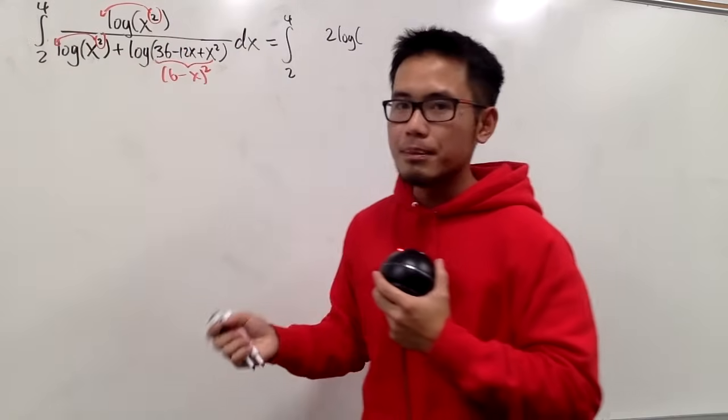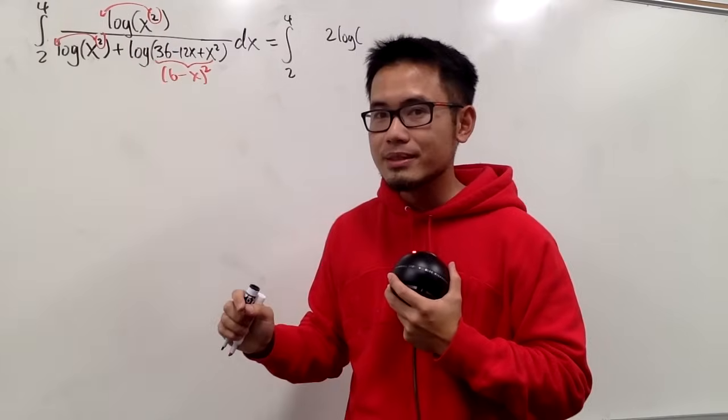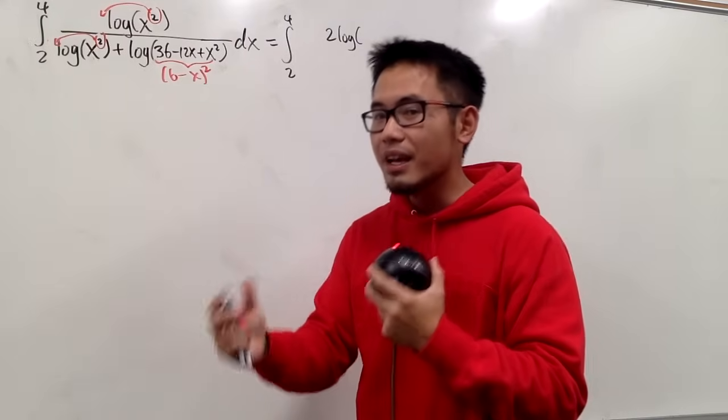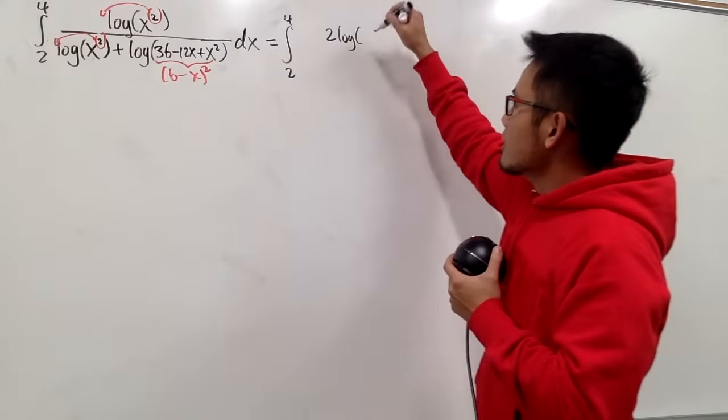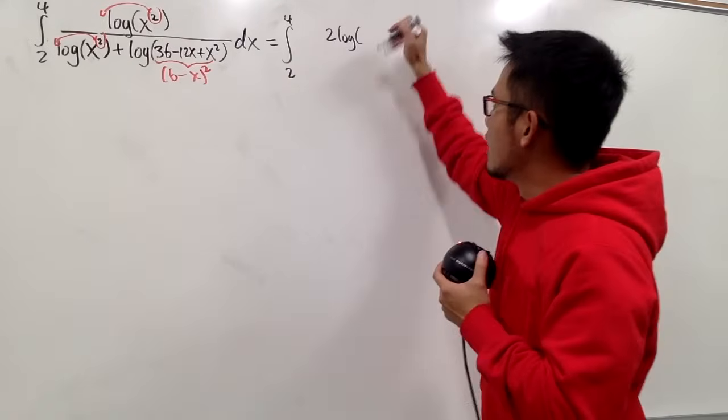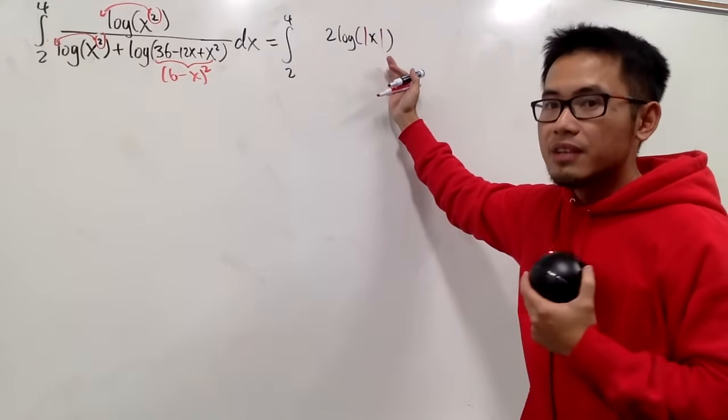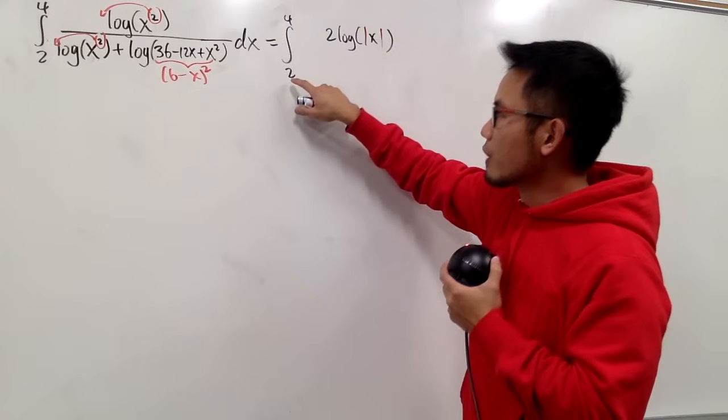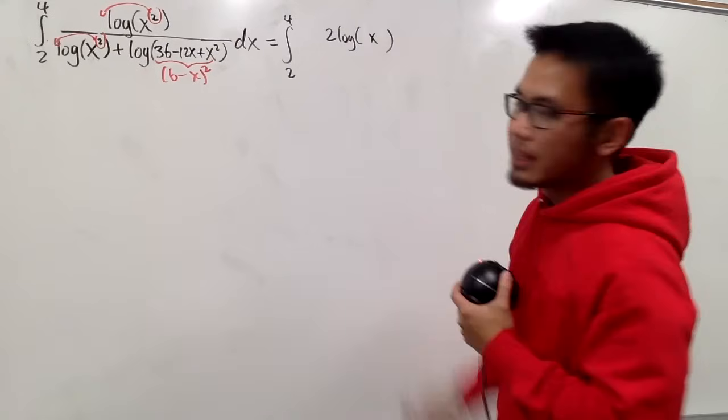If I didn't have the limits of integration, when you just want to bring the 2 to the front, let's talk about domain. Because when you have x to the second power, this right here allows x to be negative numbers. Because if you have negative numbers to the second power, it will be positive, and you are allowed to plug in that number in terms of log. However, we know we just care about x going from 2 to 4, namely positive numbers. So the absolute value is not needed.